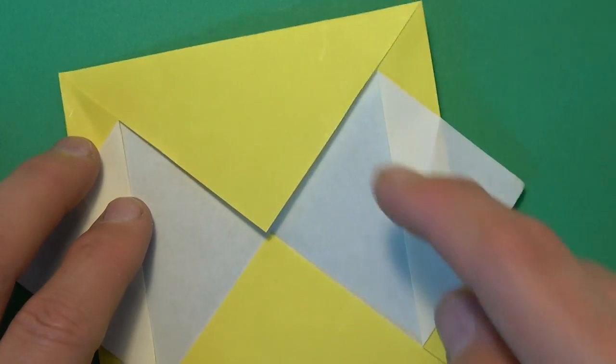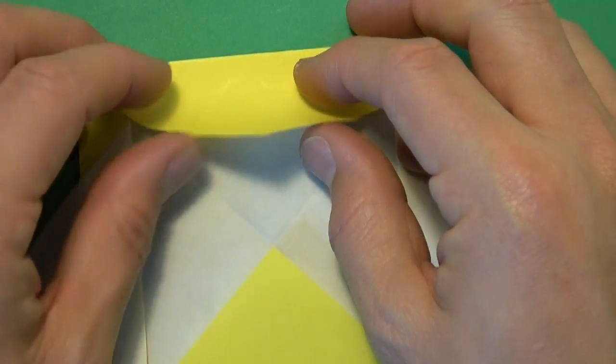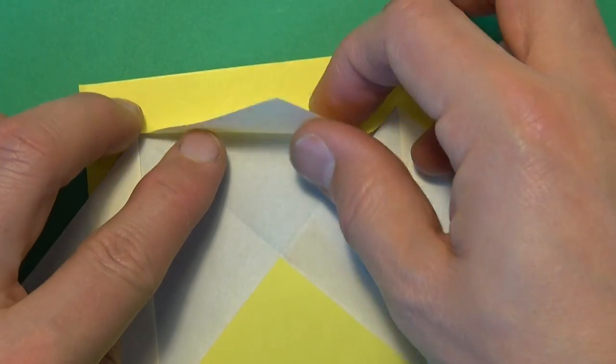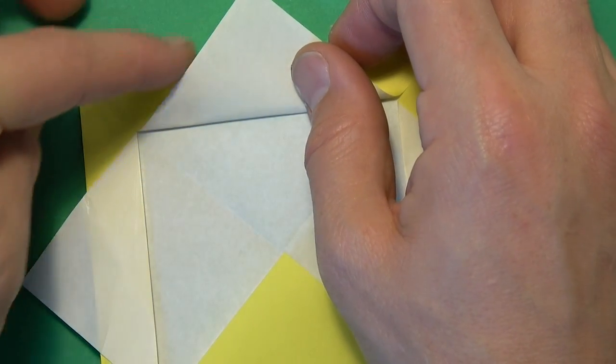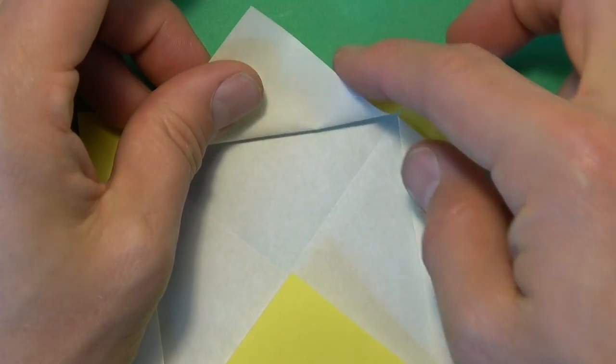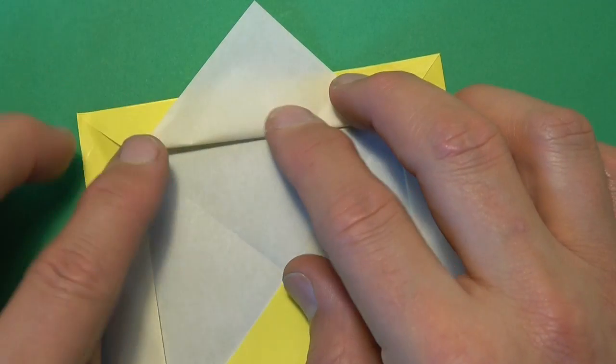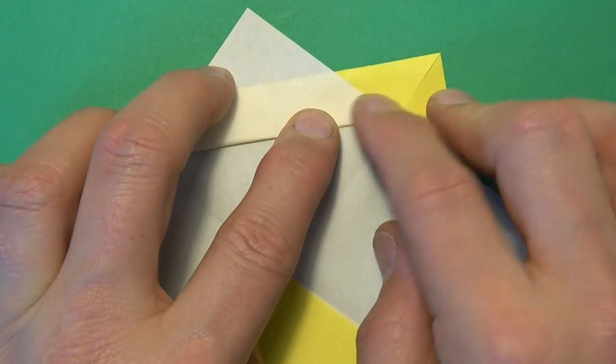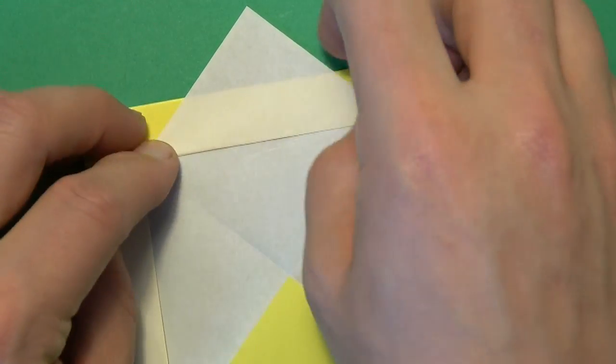And let's rotate. And let's repeat with these two flaps. But we don't need to make the pinch marks. Just fold it up so that this edge aligns with this edge. And this edge aligns with this edge. Like that.